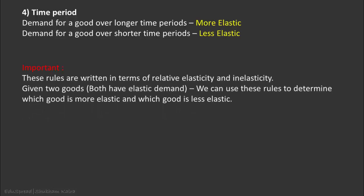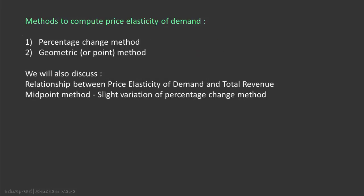It is important to note that these rules are written in terms of relative elasticity and inelasticity. So if we are given two goods and both have elastic demand, we can use these rules to determine which good is more elastic and which is less elastic. These rules do not tell us whether a good is elastic or inelastic in an absolute sense. There are mainly two methods of measurement of price elasticity of demand: the percentage change method and the geometric method. In addition, we will also explain the relationship between price elasticity of demand and total revenue, which can also be used to estimate price elasticity.